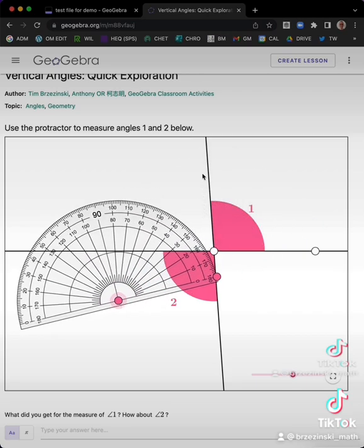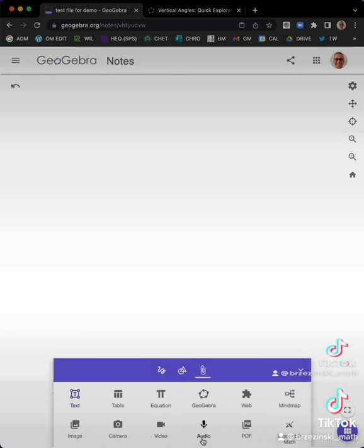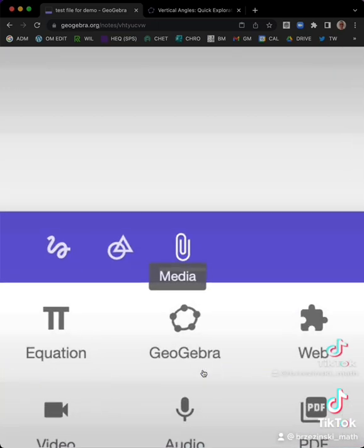So what I could do is I could take this app right here. I'm going to refresh it. That's how it comes, but I'm going to take this app. I'm going to copy the link right up there, and I'm going to go here, and I'm going to the paperclip, and I'm going to hit web right there.